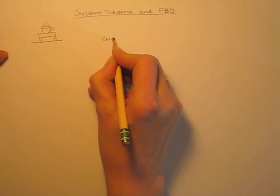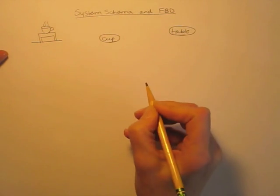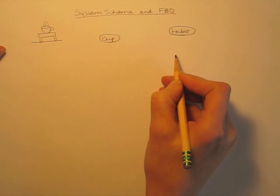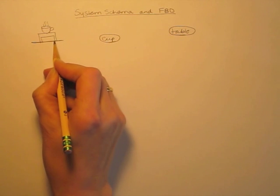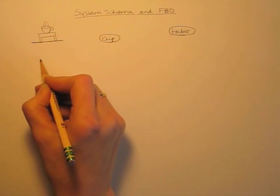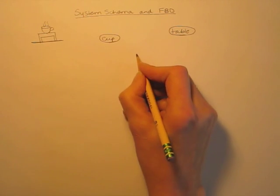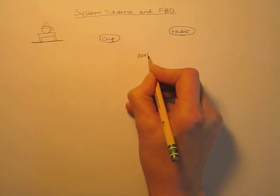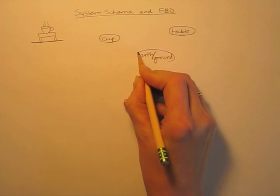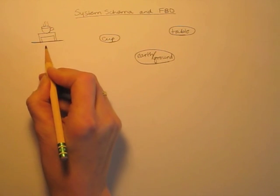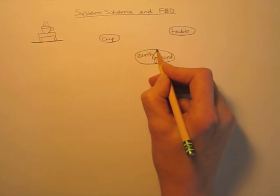Our objects in our system schema are going to be the cup, the table, and normally we would have included the earth and the ground as two different objects. Because the earth and the ground really are connected together, we're going to include them as one object on our system schema. You can feel free to do that whenever the ground or the surface is connected to the earth.